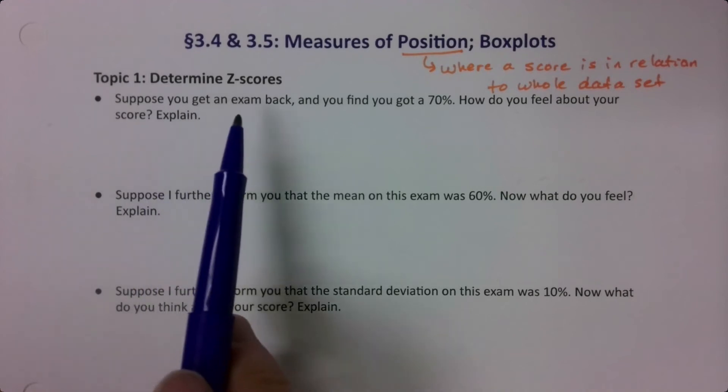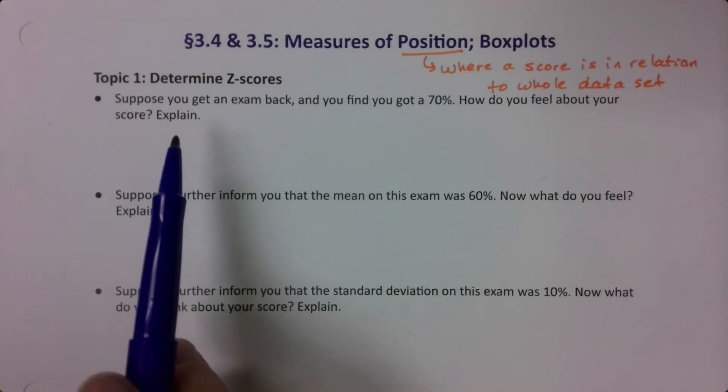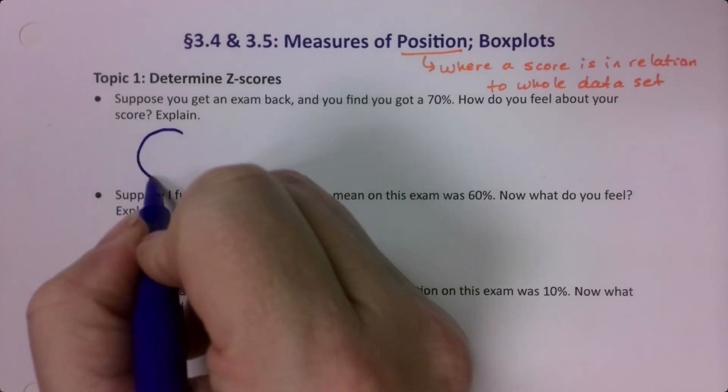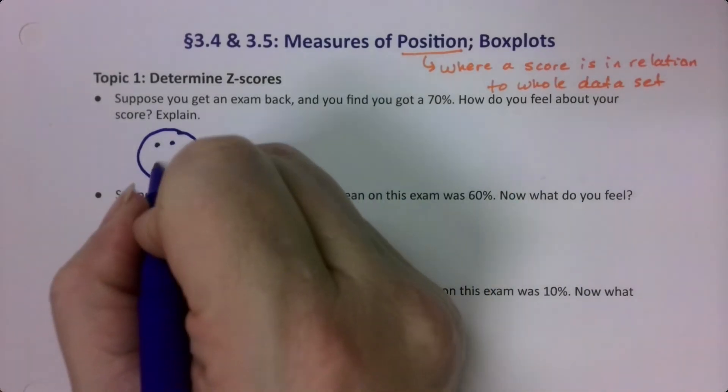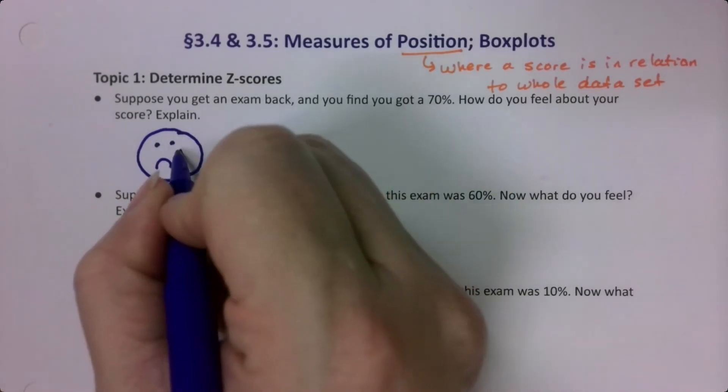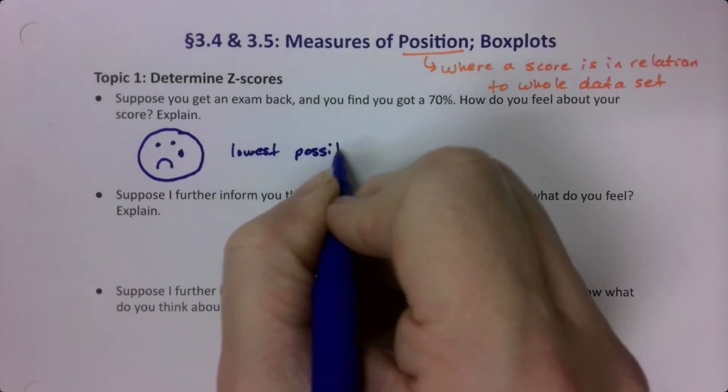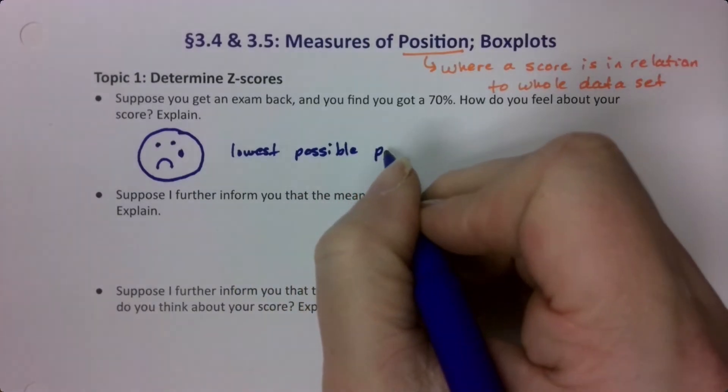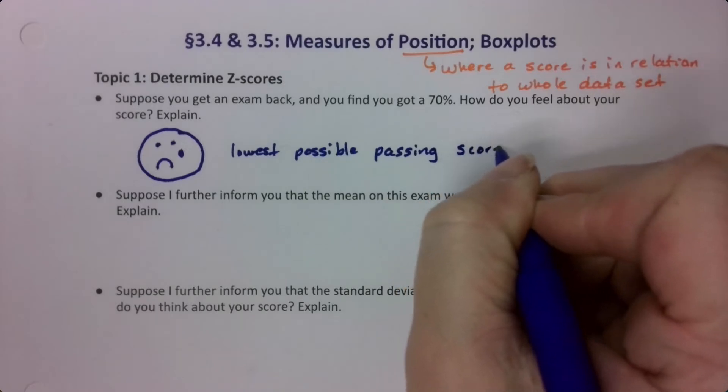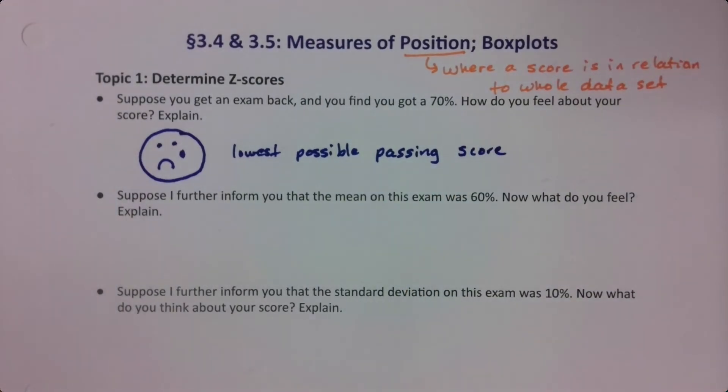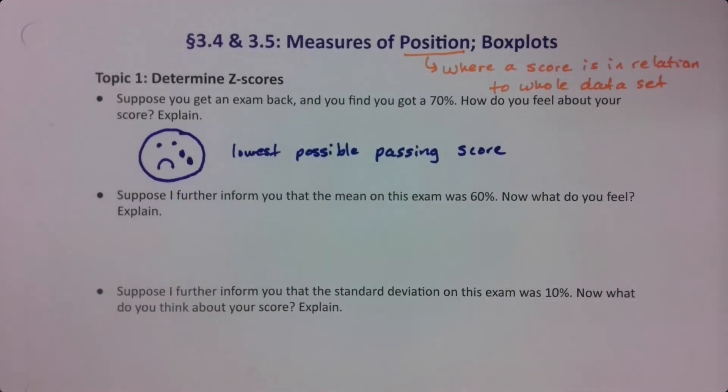Suppose you get an exam back and you find you got a 70 percent. How do you feel about your score? Well in general, most students are not happy with this score. I always get a couple students saying woohoo I passed, which is true, but you have the lowest possible passing score. So that's usually a little precarious - you might not pass the class if you only get 70 percent on the exam. So that's nerve-wracking, sort of sad. That's a little tear. I'll give it some more tears.